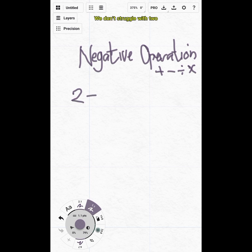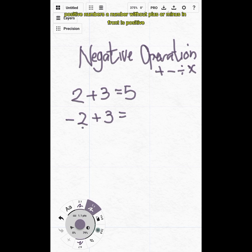We don't struggle with two positive numbers. A number without plus or minus in front is positive. A minus denotes negative, which is a reduction in value.